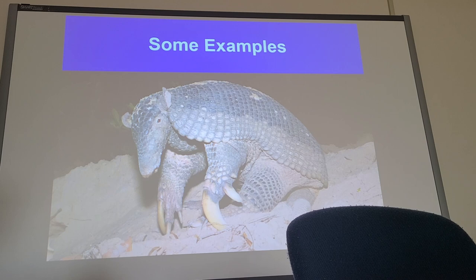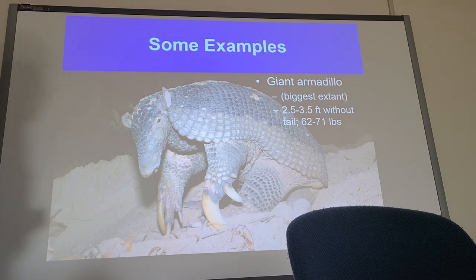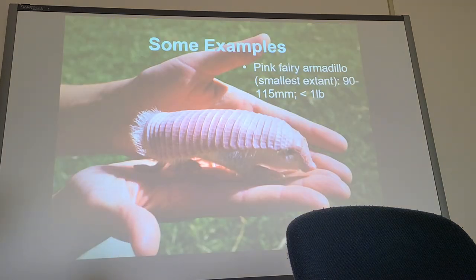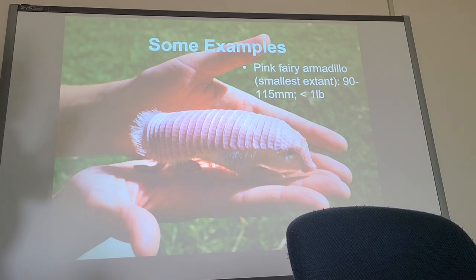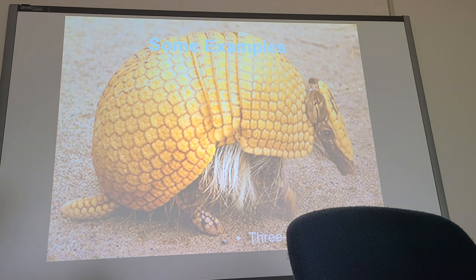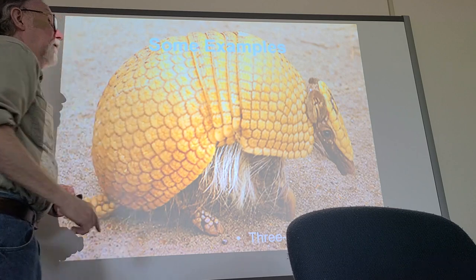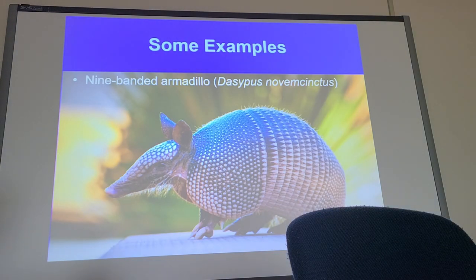Looking at existing armadillos — this is the giant armadillo, the biggest one alive today. At 70 pounds it's nothing compared to the glyptodont, but still impressive. You notice it has scaling all the way down its legs. Then there's the pink fairy armadillo — just about 115 millimeters at most, a tiny little thing. The three-banded armadillo from South America can roll itself into a complete, tight ball — the nine-banded cannot do that. And then this is ours: the nine-banded armadillo, the one I want you to know about most.